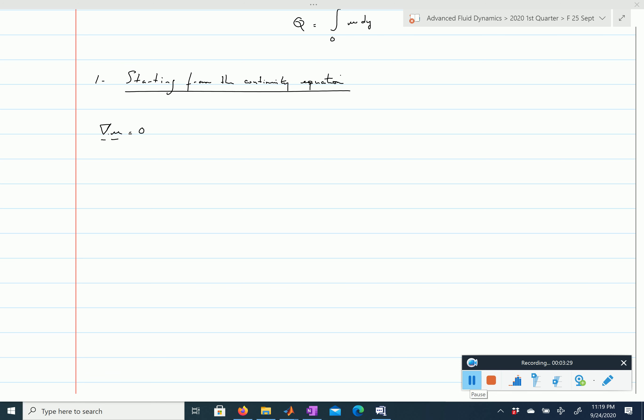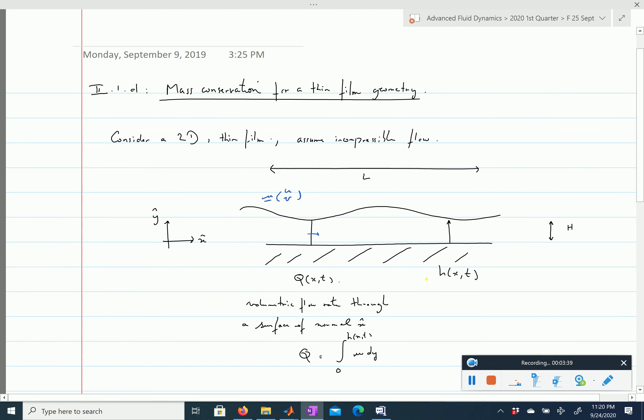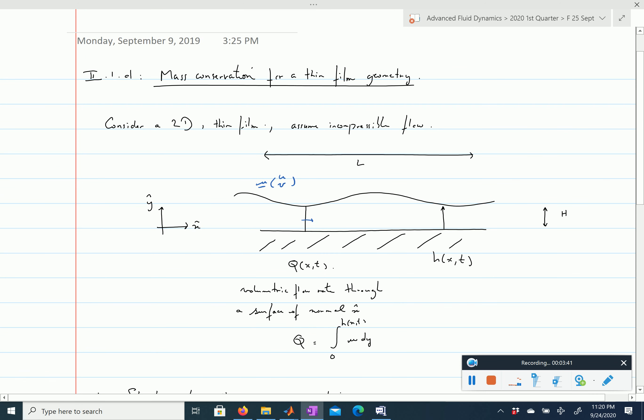In 2D this reduces to ∂u/∂x + ∂v/∂y = 0. This is mass conservation on a very tiny differential element. What we want is something that relates the height h with the volumetric flow rate q—a mass conservation statement when we integrate along the y direction over the thickness of the film.